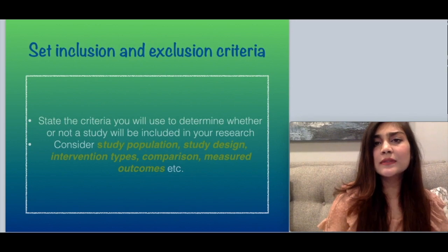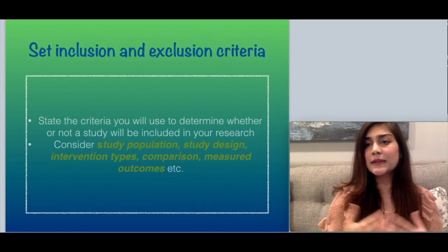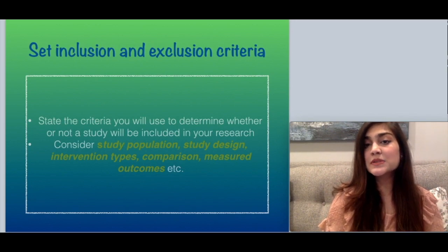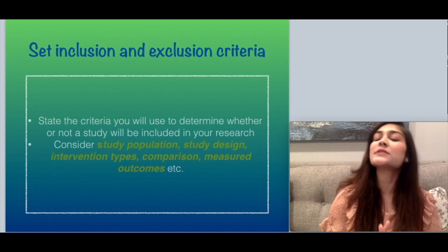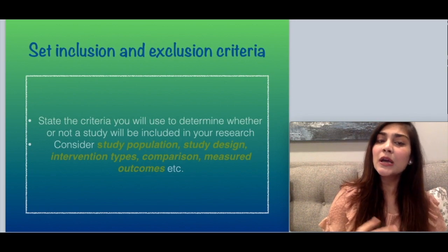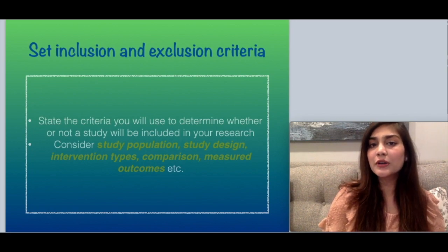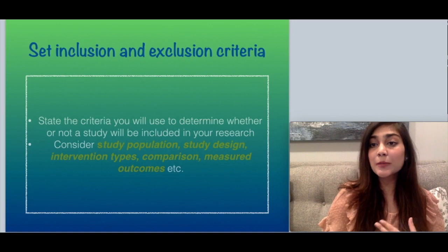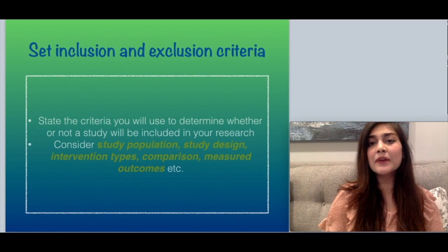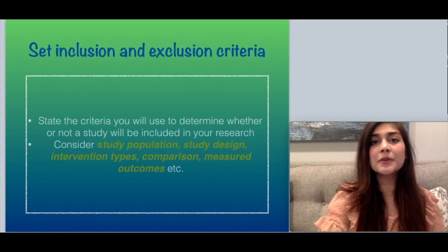Next, you set the inclusion and exclusion criteria of your study, which determines whether or not a study will be included in your research. Examples of the criteria include study population, study design, intervention types, comparison, and measured outcomes.